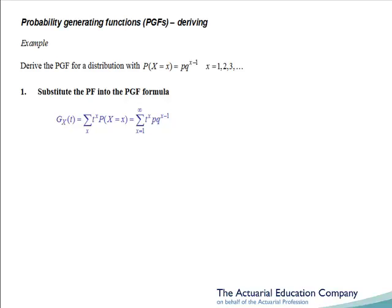Now it would be great if we could sum this into a simple answer. To do that, we'll do step 2, which is to write out the first couple of terms so we can see what's happening. When x equals 1, we have t to the 1 times p times q to the 0, which gives us tp. When x equals 2, we have t squared times p times q to the 1, so t squared pq. When x equals 3, we have t cubed times p times q squared, so t cubed pq squared, and so on. That's enough terms for us to see the pattern.